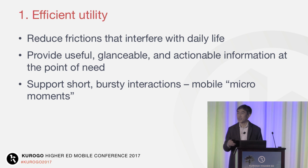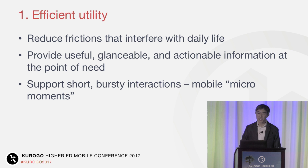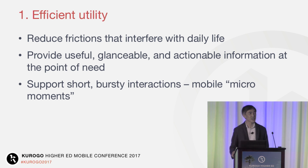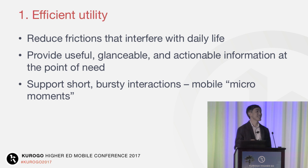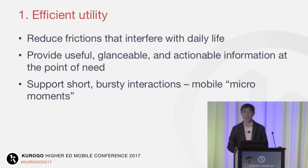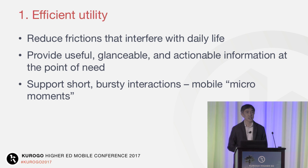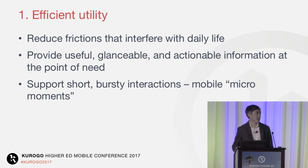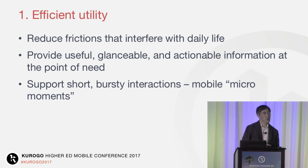Efficient utility is about reducing the small day-to-day and moment-to-moment frictions that slow you down as you go about your real-world life. It's about providing useful, glanceable, and actionable information at the point of need — overwhelmingly not when you're sitting at a computer, but when you reach into your pocket at that moment of need. Efficient utility caters to the short, bursty mobile interactions that are the demonstrated reality of mobile interaction patterns, very different from usage patterns that UX designers grew up catering towards over decades.